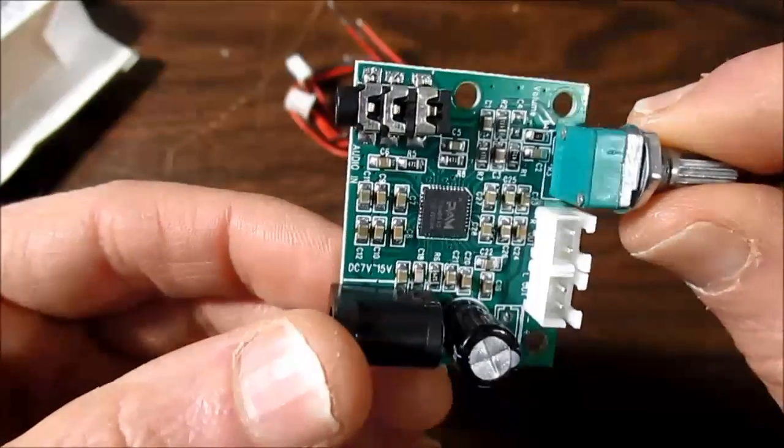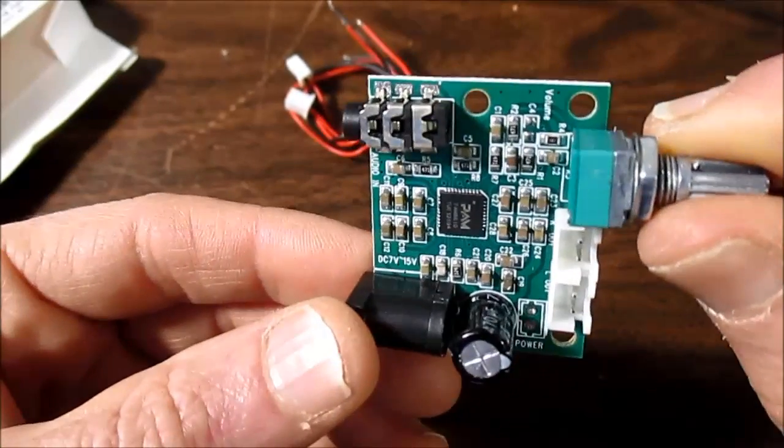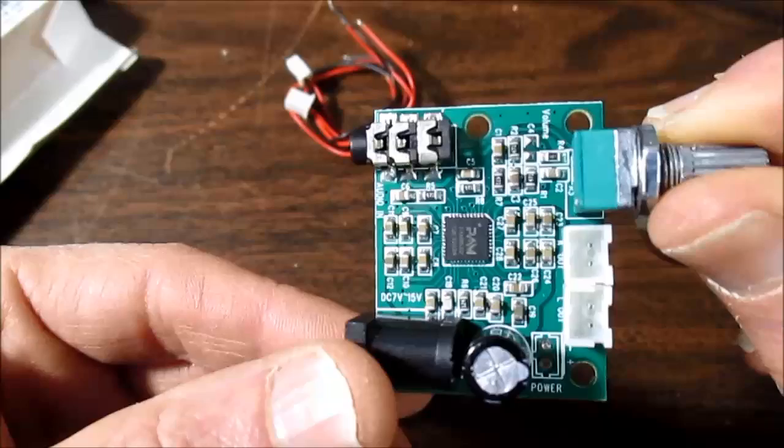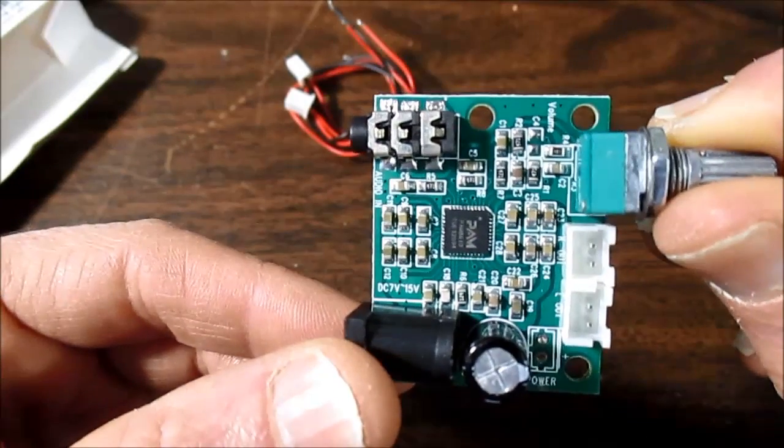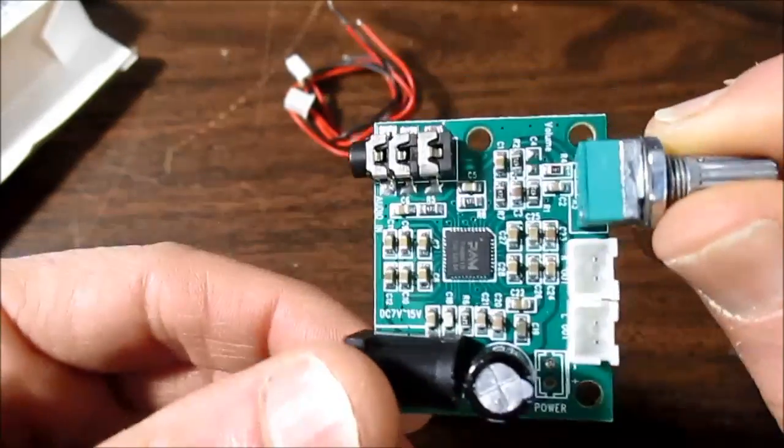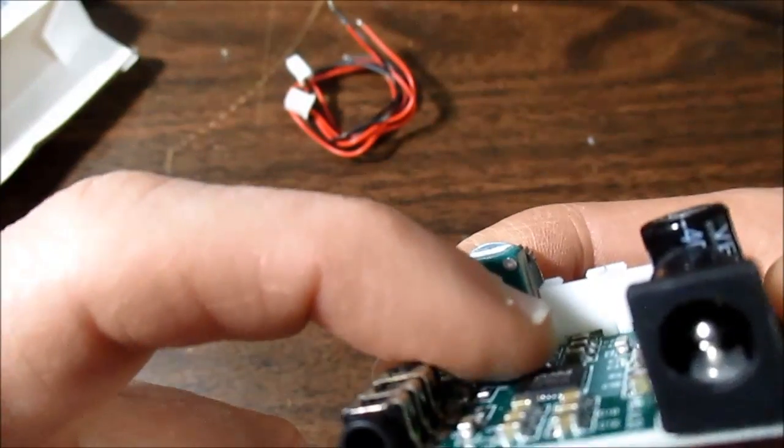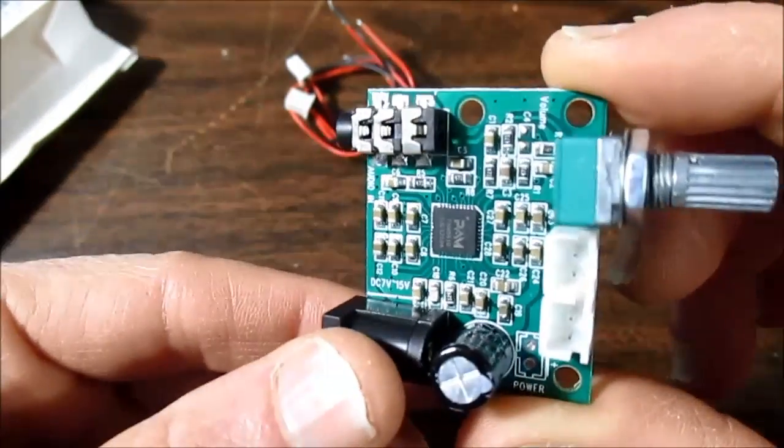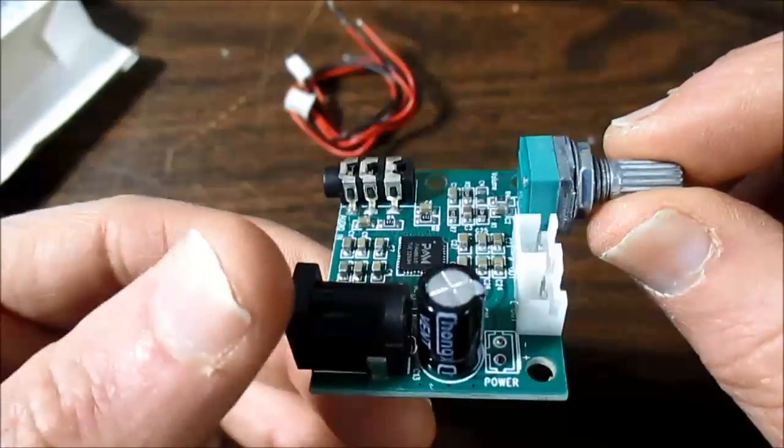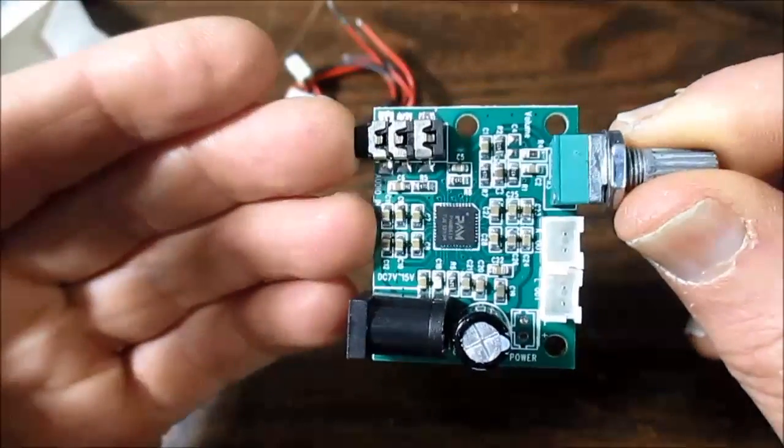So, you're going to want to connect this to 8 ohm speakers. Don't use it with 4 ohms. I can just tell by looking at it that it will get very hot. In fact, the datasheet even says so. You're going to have to have a heat sink if you're going to use it with 4 ohms. And the way it's laid out here, see these components are taller than the chip itself. It would be very difficult to get a heat sink on there. So, I would strongly encourage not using 4 ohm loads. Ok, let's hook the thing up and give it a listen.